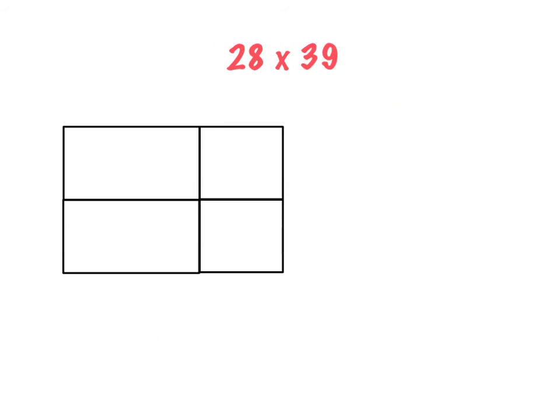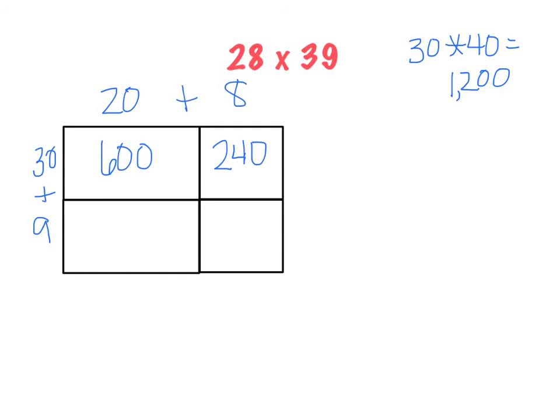Okay, when we multiply two two-digit numbers, it's going to work the same way. First, we're going to start off with an estimate. So I'm going to round 28 to 30 and 39 to 40. Then I'm looking for an answer around 1,200. So I'm going to show you the area model first. So 20 plus 8 times 30 plus 9. 30 times 20 is 600. 30 times 8 is 240. 20 times 9 is 180. 8 times 9 is 72.